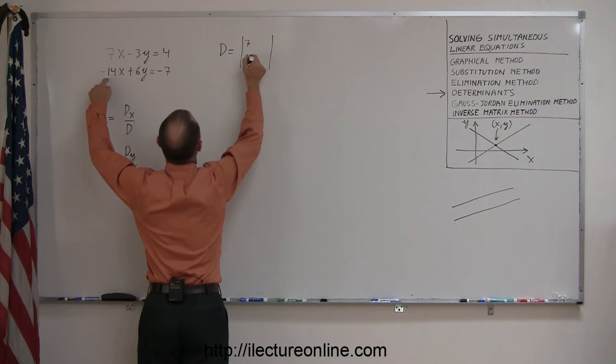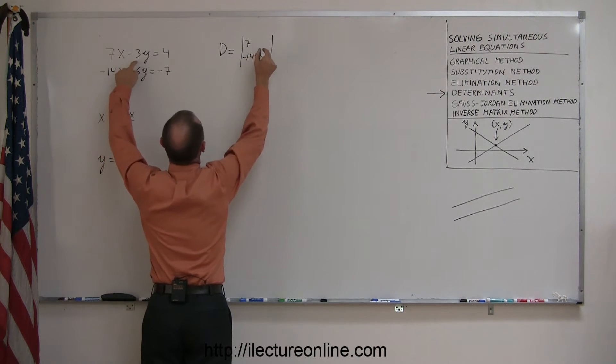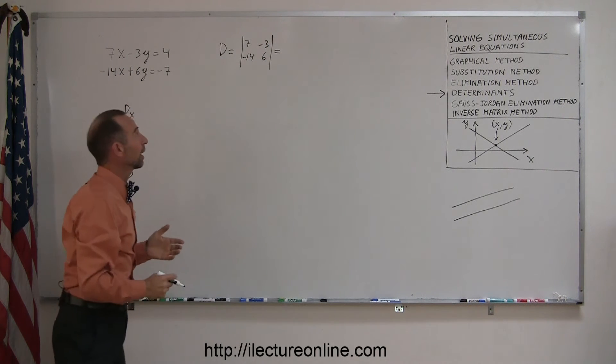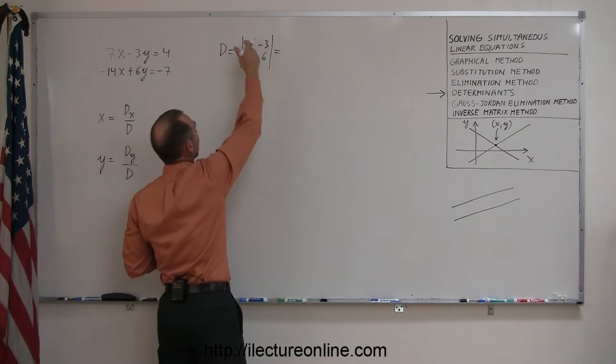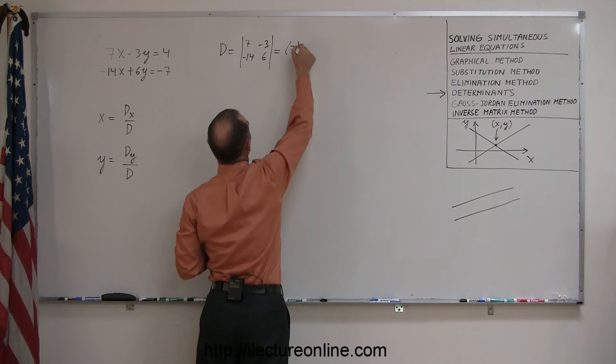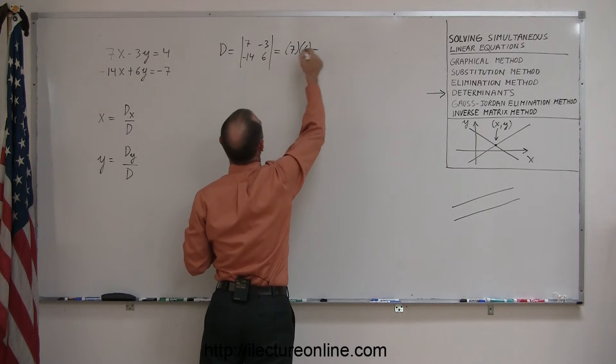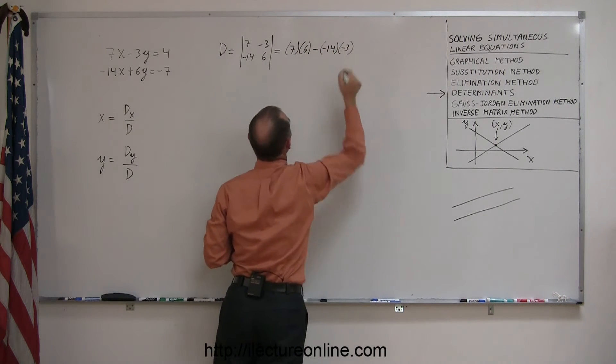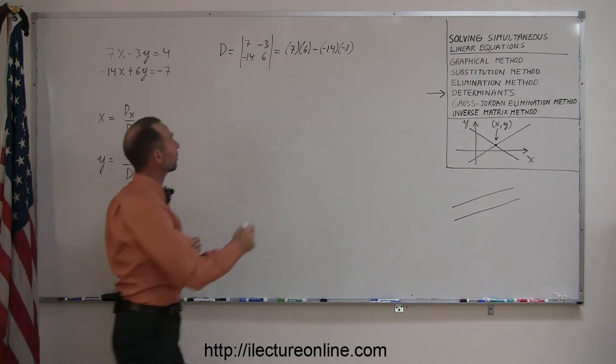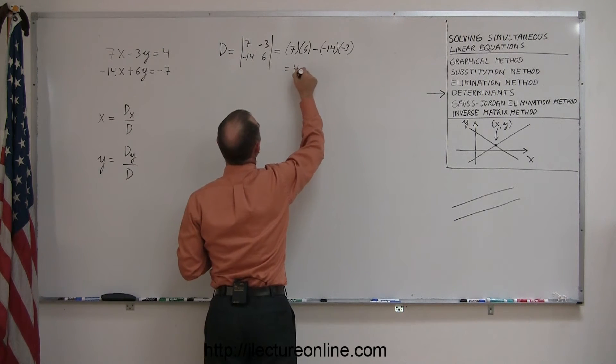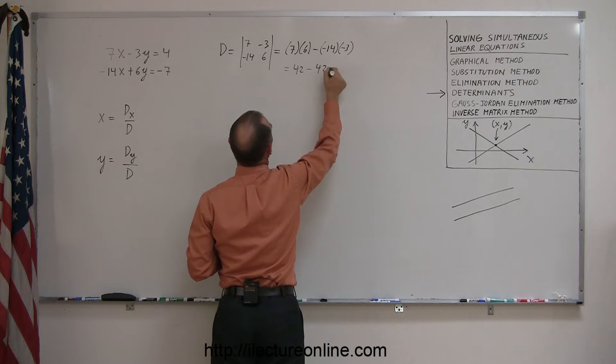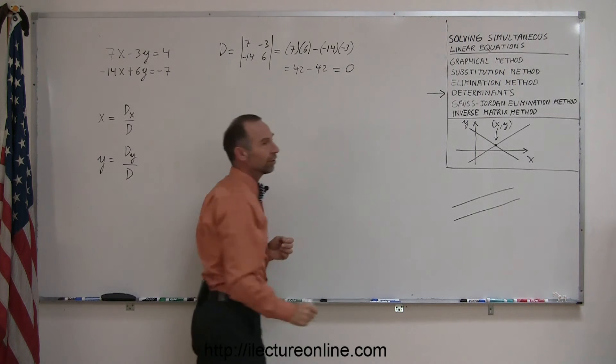So we put in the 7, the minus 14, the minus 3, and the positive 6. And then we find the determinant by multiplying the numbers in the diagonal and subtracting from that the product of those two. So 7 times 6, that's equal to 42. And a minus times a minus, 14 times 3, that's 42. And it means that the determinant is equal to 0.